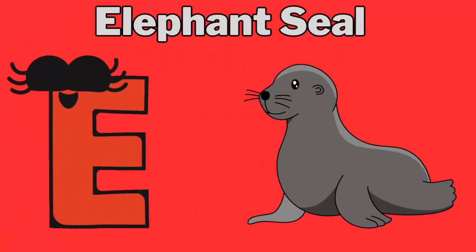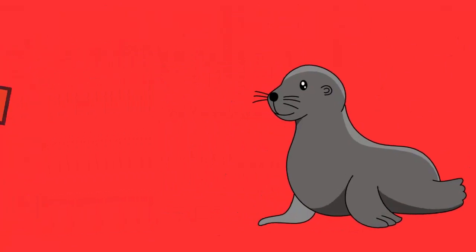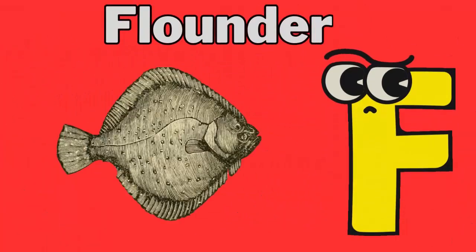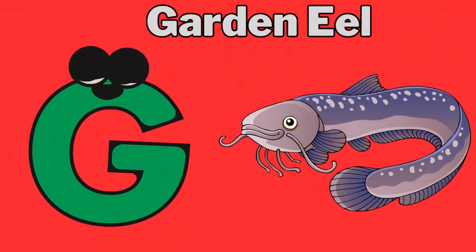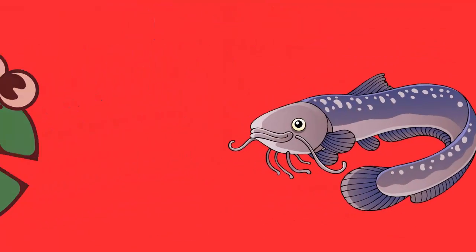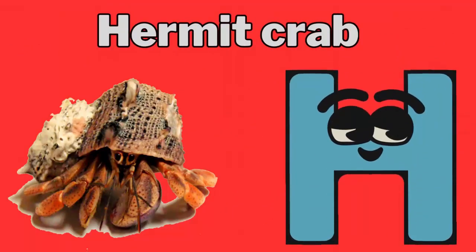E for elephant seal. F for flounder. G for garden eel. H for hermit crab.